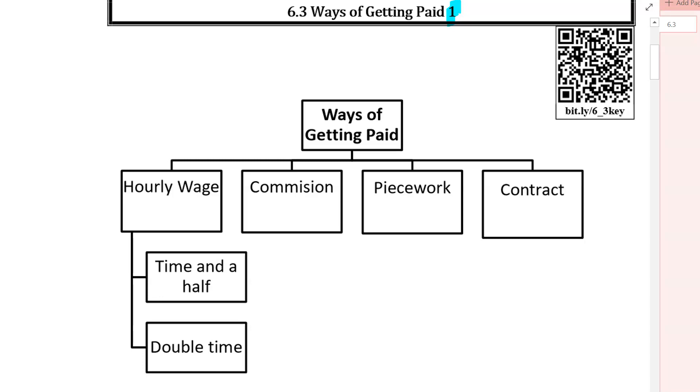So the one that we've talked about already is the hourly wage. And within hourly wage, we're going to be covering today like when you get extra. So instead of just your regular hourly wage, there's also something called time and a half, and there's double time. And the other thing that we're going to cover in this one is commission.